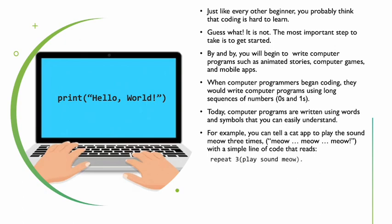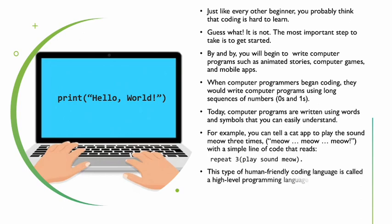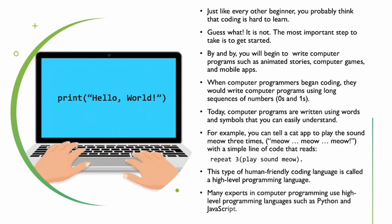You achieve this by writing a simple line of code that reads: repeat three, and in two brackets, play sound meow. This type of human-friendly coding language is called a high-level programming language. Many experts in computer programming use high-level programming languages such as Python and JavaScript.